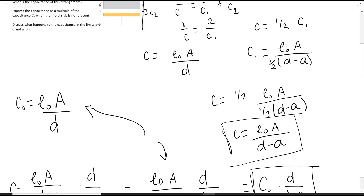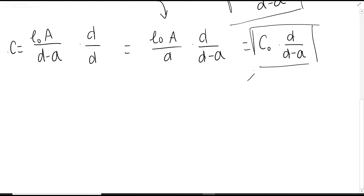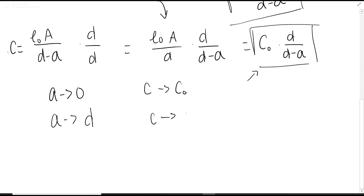The last part asks what happens to capacitance as A approaches 0 and as A approaches D. Using C equals C₀ times D over (d minus a): as A approaches 0, the denominator becomes D over D which equals 1, so C just becomes C₀. As A approaches D, the denominator becomes D minus D which is 0, so D over (d minus a) goes to infinity, meaning C goes to infinity — you're multiplying C₀ times infinity.